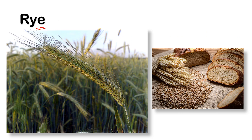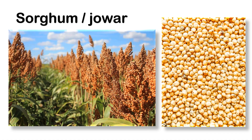Next crop is rye. This is the rye plant and that is the grain. Next crop is sorghum. Sorghum produces a flower.